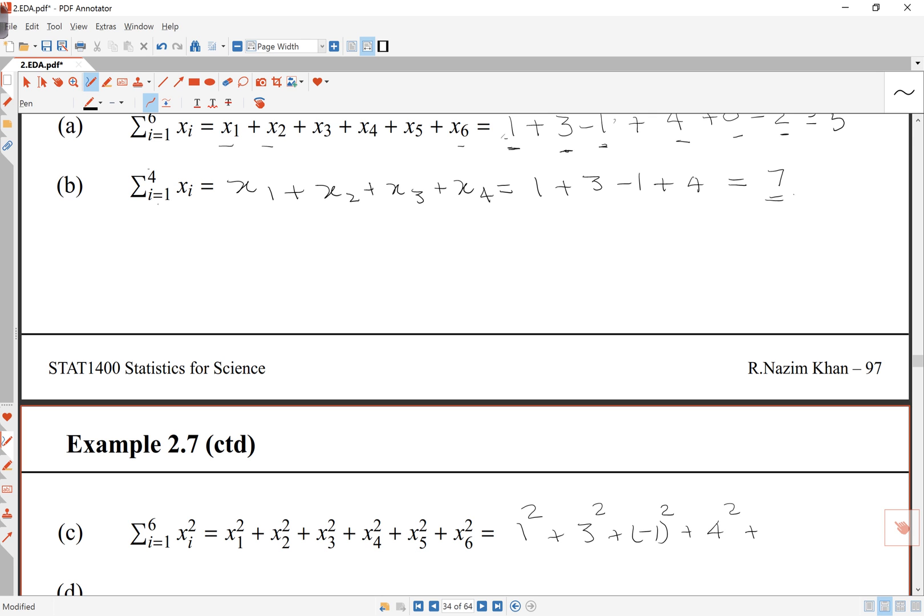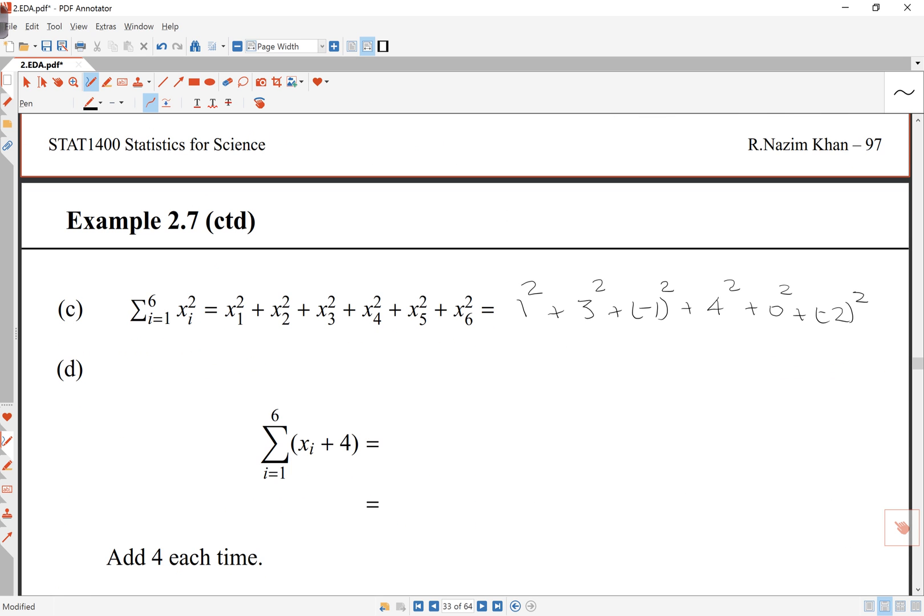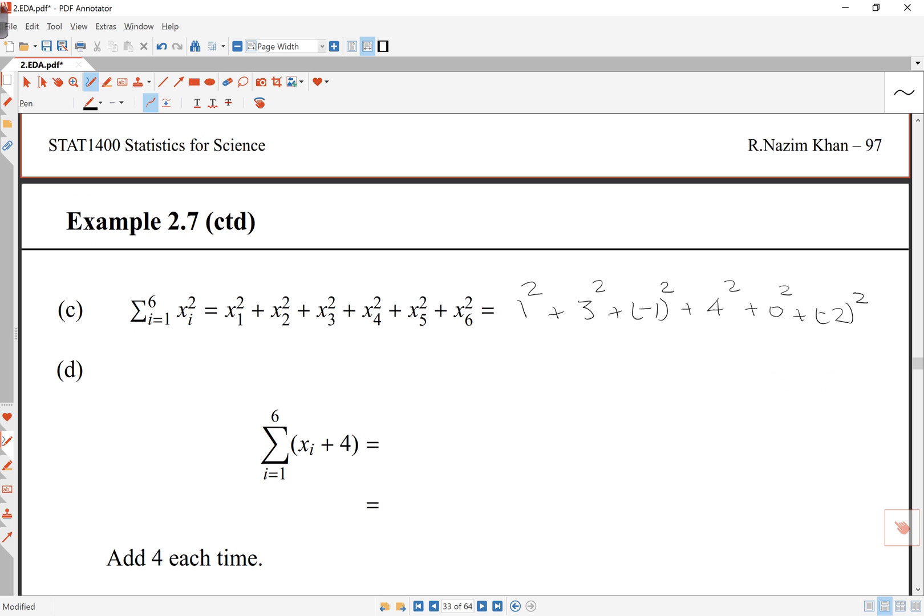Be careful, it's a negative 1 there, so it's a negative 1 squared, plus 4 squared, plus 0 squared, and again be careful, it's a negative 2 squared. Negative squared becomes positive. So in this case, I'm going to get 1 plus 9 plus 1 plus 16 plus 0 plus 4. That gives me 31.